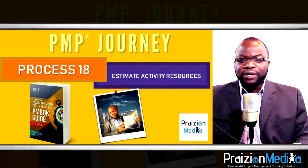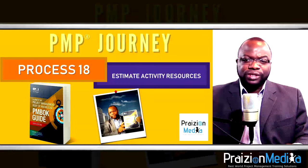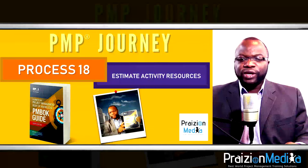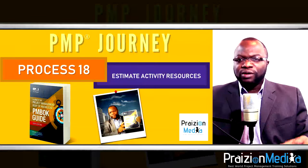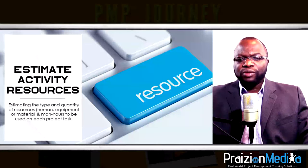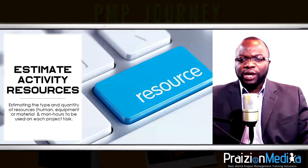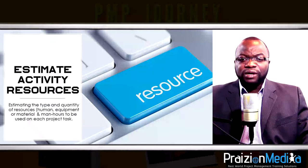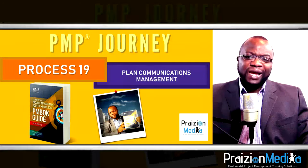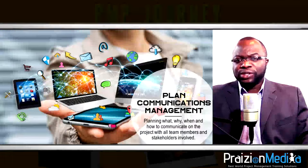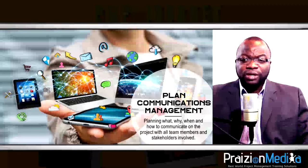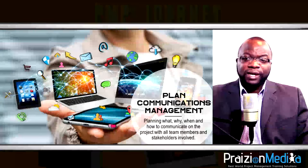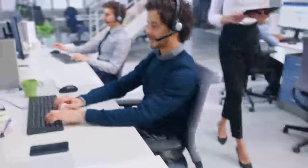Process 18: Estimate activity resources. This is where you ask: what kind of effort are we talking about? That will take 50 hours of effort — how many people do you need, and what skill level is required within that time period? Process 19: Plan communications management. The project manager thinks about what to communicate, why, how, when, and to whom.